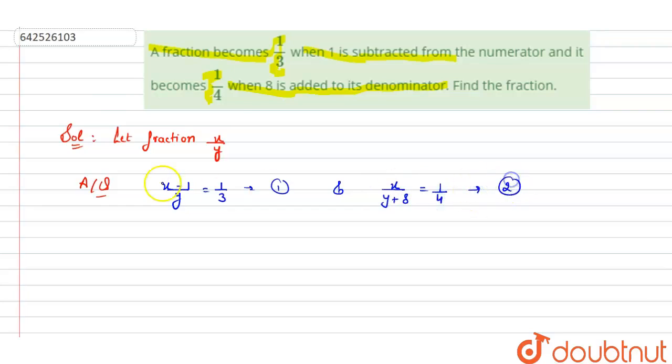We just have to solve these two equations. Now cross multiplying, 3x minus 3 is equals to y.